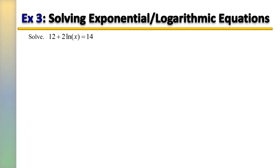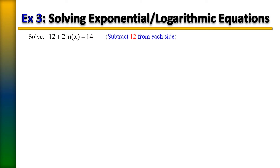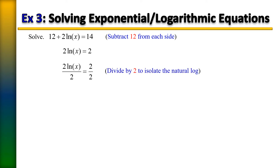Number 3: 12 plus 2 times the natural log of x equals 14. Step 1 is to isolate the natural log by itself. Right now it's on the side along with 12, so we subtract 12 from each side. Then to isolate the natural log, it's being multiplied by 2, so we divide by 2. Once we simplify, we're left with the natural log of x equals 1.